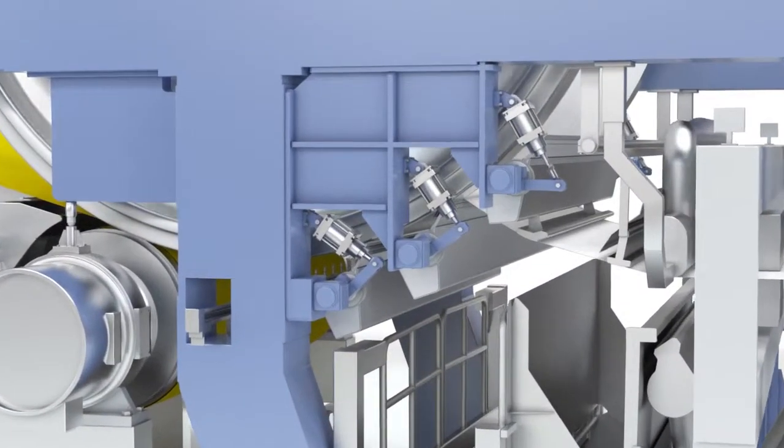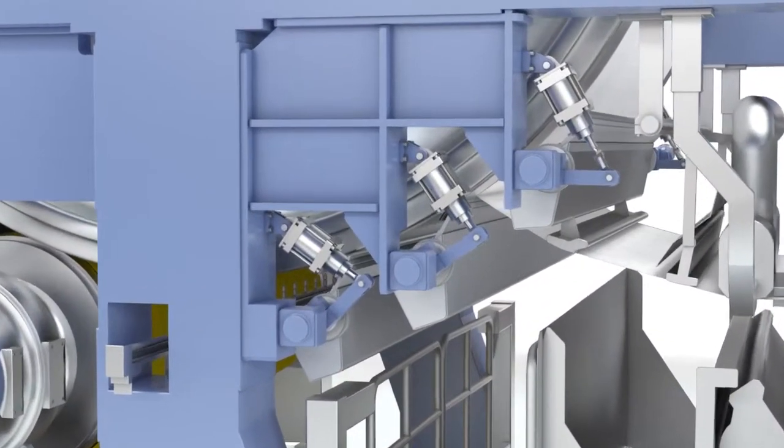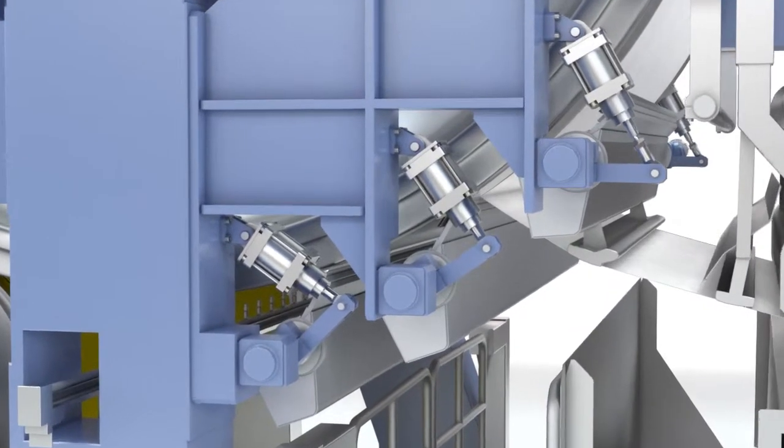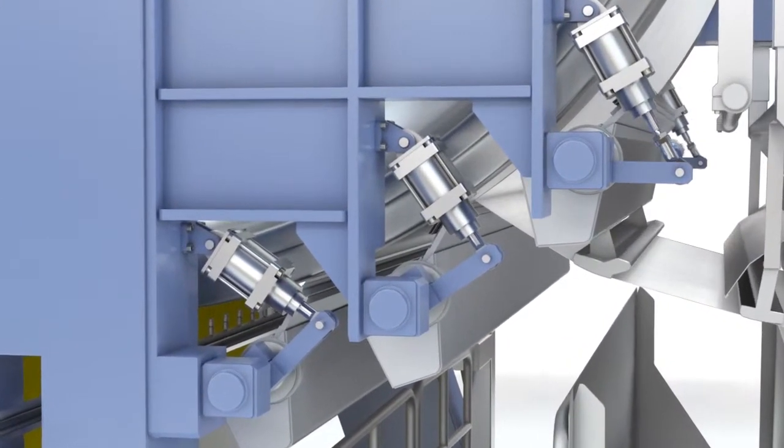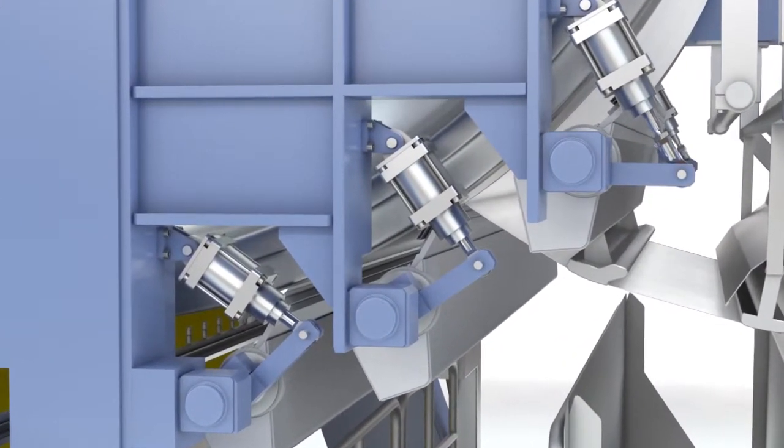Not only does it have to release the paper web from the Yankee cylinder with as little damage to the cylinder surface as possible, it also has a substantial influence on the creping of the paper.